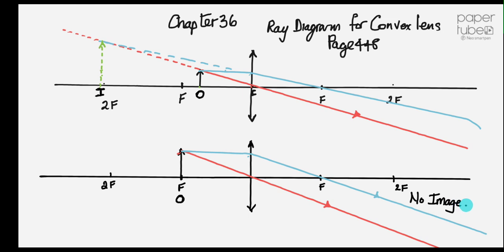This could be you focusing the sun at the focal point, maybe to set fire to paper or something — a bit of excitement. So if the object is at f, there is no image. Let's do the next one.